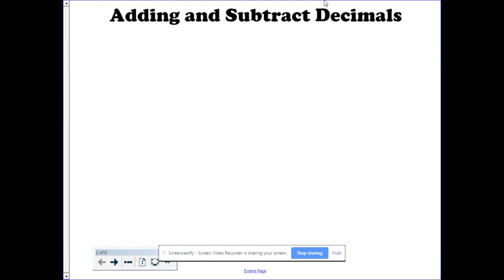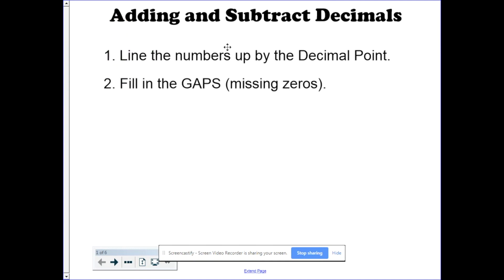There are just three steps you need to remember because there is a decimal point. First, line the numbers up by the decimal point. Second, fill in the gaps. Sometimes the decimal places don't match up. There are three in the top number and two in the bottom number, so you need to put zeros in as placeholders to make sure every place value is accounted for in the decimals. And three, add and subtract as normal. Simple as that.